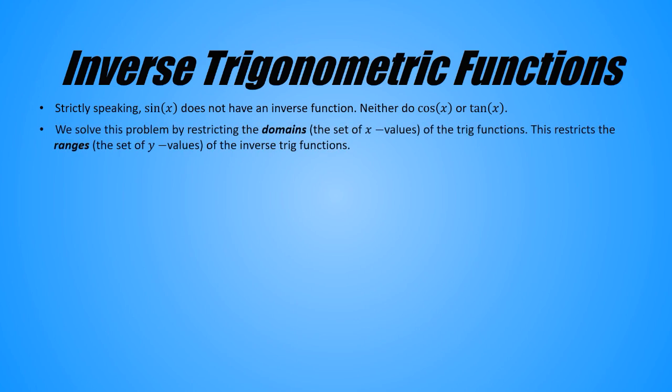Here's how. We solve this problem by restricting the domains, that is, the set of x values, or inputs, of the trig functions. This restricts the ranges, which is the set of y values, or outputs, of the inverse trig functions. Here's how we restrict the sine function. We limit the domain to the closed interval from negative pi over two to pi over two. A closed interval includes its endpoints, and these brackets indicate that the interval is closed. We only allow this part of the function to have an inverse.